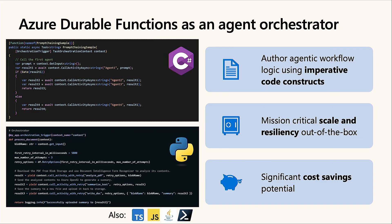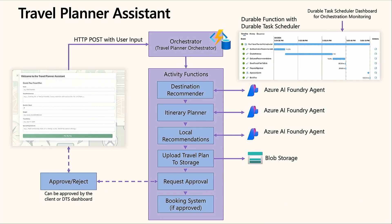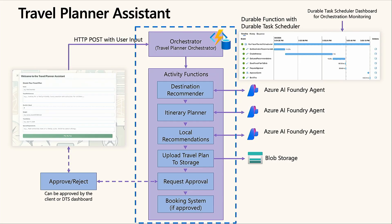I'm going to hand it over to Nick, who will show an example. Today I'm demoing a travel planning app built using Durable Functions that implements a deterministic agentic workflow — it generates a personalized trip plan and then handles booking that trip, entirely based on user input sent as a request.